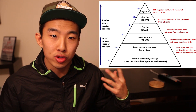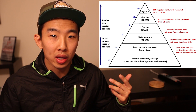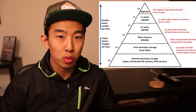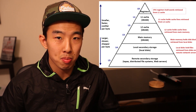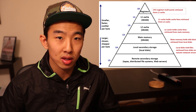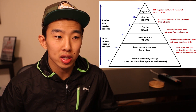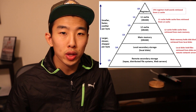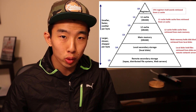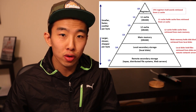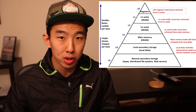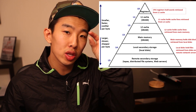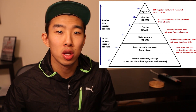So bottom of the hierarchy is for slow and big memories. At the very top of the memory hierarchy, that's where the fastest and smallest memories exist. The fastest and smallest memory is a register and I'll talk about that later. So let's just recap real quick: the bottom of the memory is for slow and big memories, and the top of the hierarchy is for fast but really small memories.